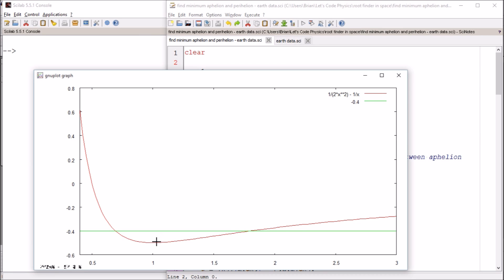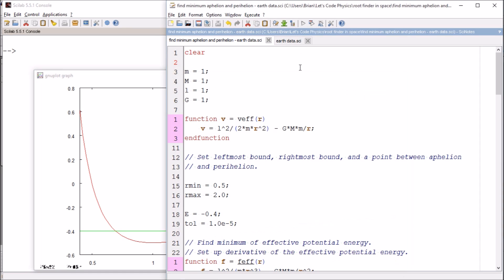We've created a code that will find this minimum point here given a leftmost bound and a rightmost bound. It can find the minimum and then it can find given the total energy the closest point, the perihelion, and the farthest point, the aphelion. What we want to do now is check to see whether this code correctly predicts the results for Earth's orbit.